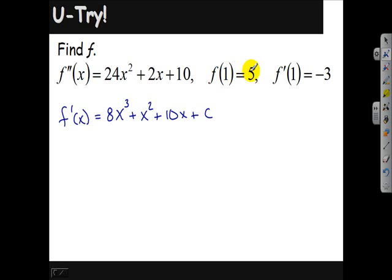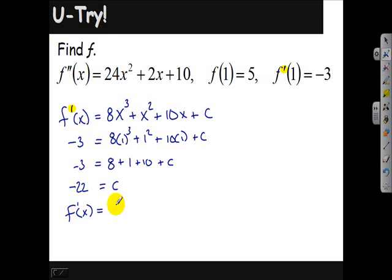However, when f prime is 1, we're supposed to get negative 3. So we know that f prime of 1 is negative 3. So that would equal 8 times 1 cubed plus 1 squared plus 10 times 1 plus c. So negative 3 is the same as 8 plus 1 plus 10 plus c. What does this equal? 19. If we subtract that 19 from both sides, we end up with negative 22.